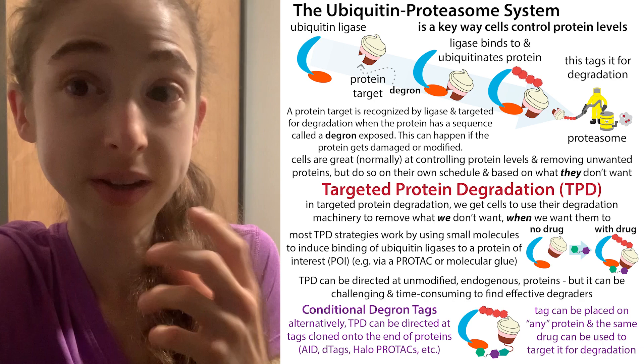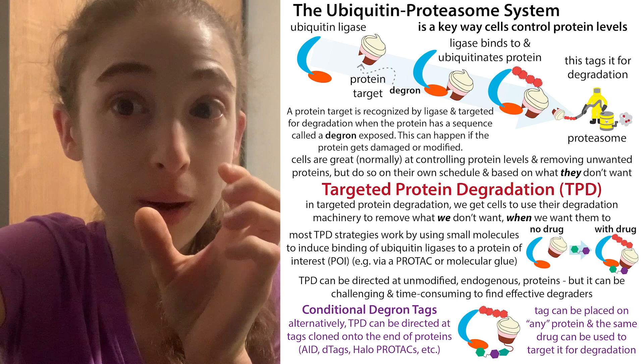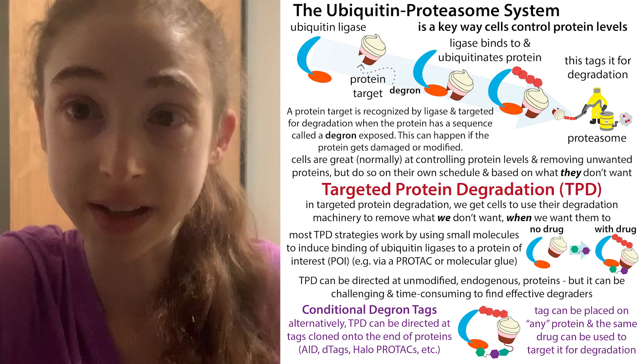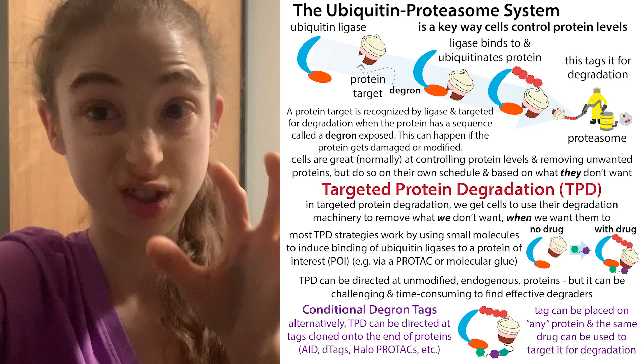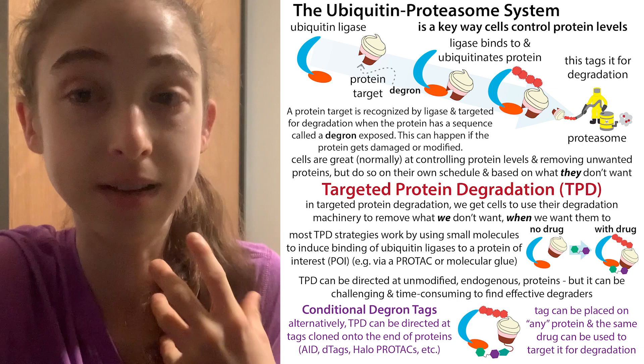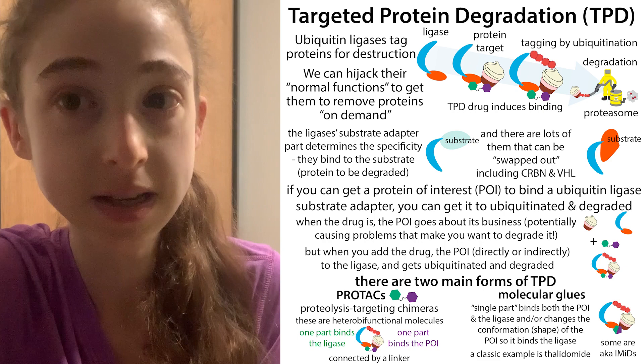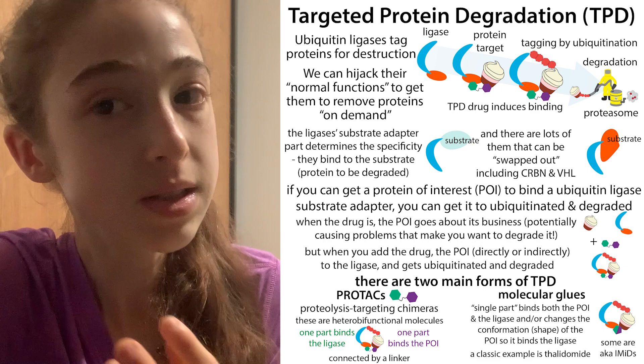Normally, the cell does this on its own schedule. There are little sequences in the protein called degrons. These degrons can get exposed if the protein gets unfolded, if a binding partner moves away and exposes the degron, or if a modification to the protein turns a normal sequence into a degron. A degron is basically the sequence that can serve as a site to get bound by and ubiquitinated by ubiquitin-adding enzymes — ubiquitin ligases. Cells naturally ubiquitinate and degrade proteins when they're damaged or no longer wanted.